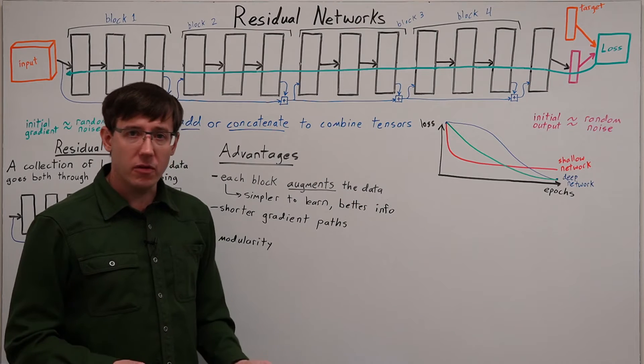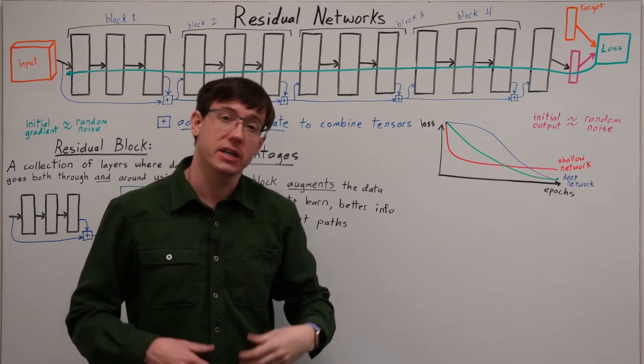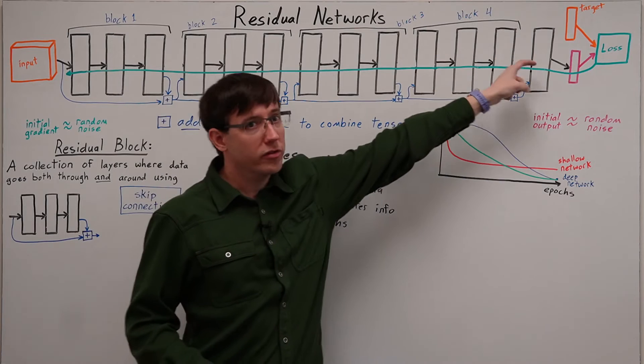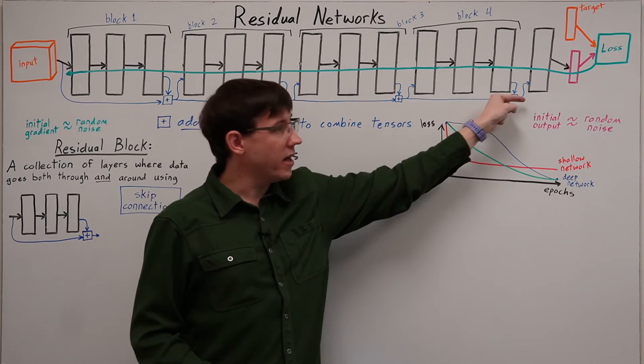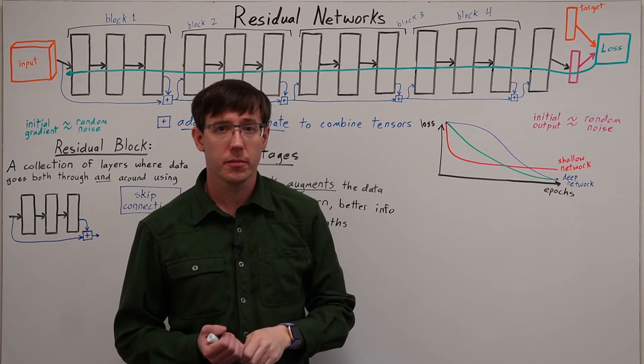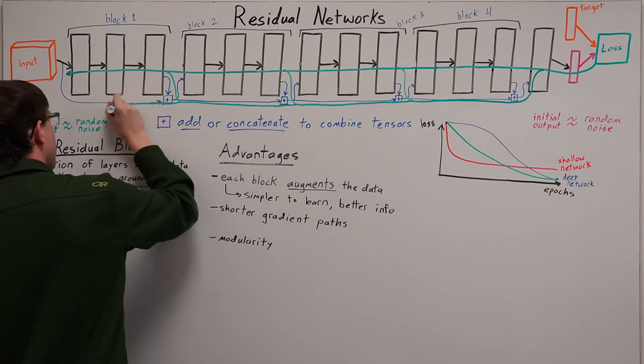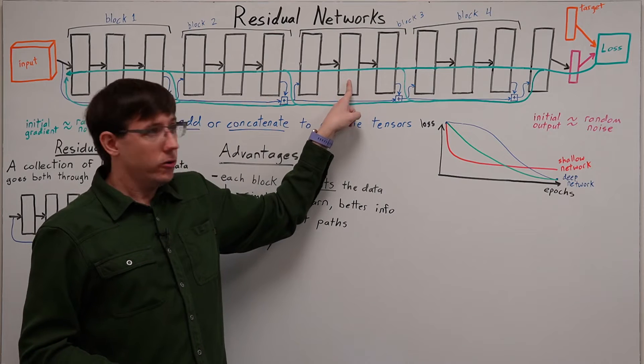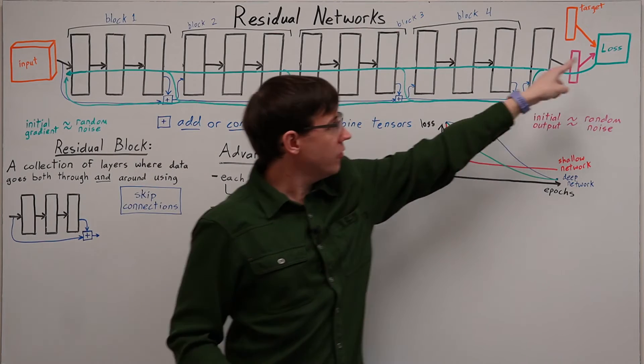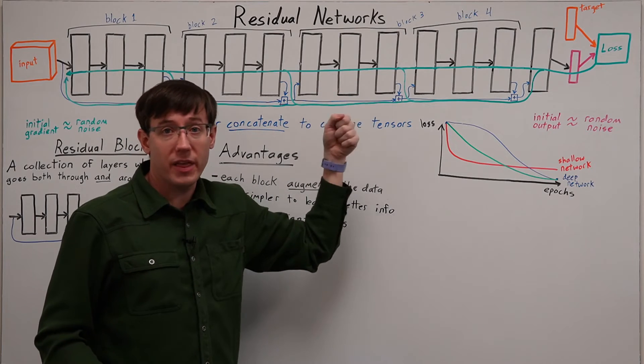The second big advantage is that we now have much shorter paths for the gradients to follow to get to each layer of the network. Since each block has one path that goes through its layers and one path that goes around them, the gradients will flow along both of those paths. And this means that any layer in the network now has a relatively short path by which lost gradients can arrive, and usefully update what that layer is computing.